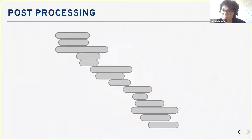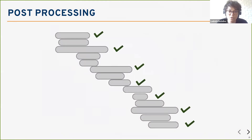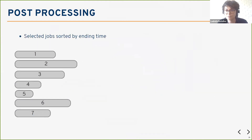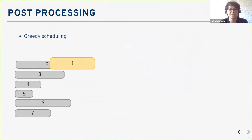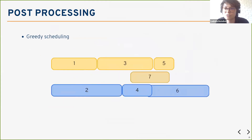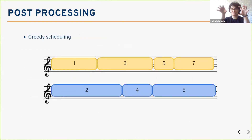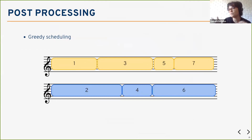Now that we have the samples, there is also some post-processing. We have a list of jobs sorted according to the end time of each job. We apply a greedy scheduling algorithm: one machine selects jobs until there is a conflict, then another machine starts taking jobs, and so on until all jobs are sorted. Then we can generate the song.